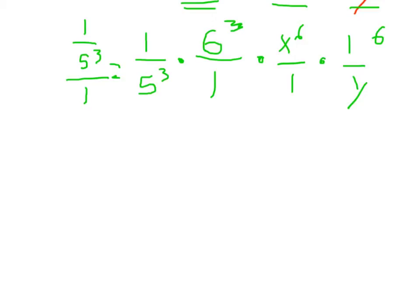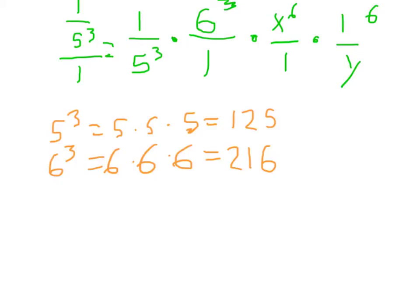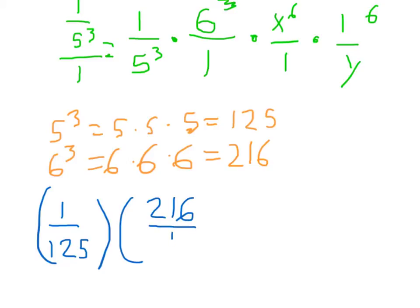So we have 5 to the 3rd, which is 5 times 5 times 5, which is equal to 125. And then 6 to the 3rd is 6 times 6 times 6, which is 216. So now we have 1 over 125 times 216 over 1 times x to the 6th over 1 times 1 over y to the 6th.